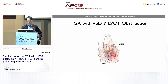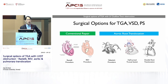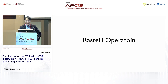For TGA with VSD and LV outflow tract obstruction, we have two main surgical options. One is the Rastelli type operation, and the other one is the aortic root translocation. We have some modifications of these two procedures, and I'm going to talk about these procedures today.